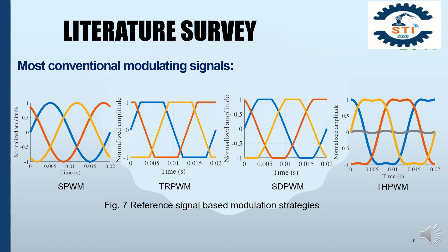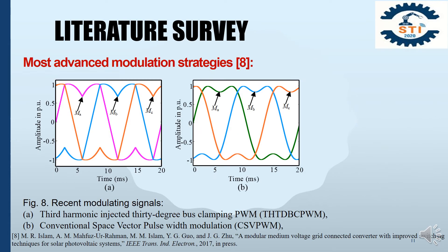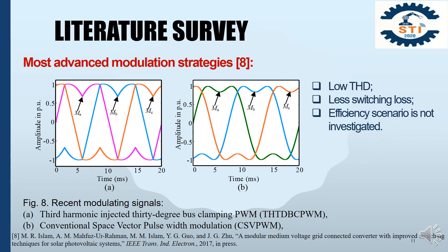Figure 7 shows the most conventional modulating signals for generating firing pulses. But at present, they have lost their importance because of higher switching losses as well as higher total harmonic distortion. Researchers are trying to find a topology that can reduce the total harmonic components as well as inverter losses, so that the efficiency of the system can be improved. Figure 8 shows the most recently published modulating signals for generating firing pulses. Figure 8a shows the third-harmonic-injected 30-degree pulse clamping PWM, and 8b shows the conventional space vector pulse-width modulation. There are several advantages like low THD and less switching losses, but their efficiency scenario has not been investigated yet.